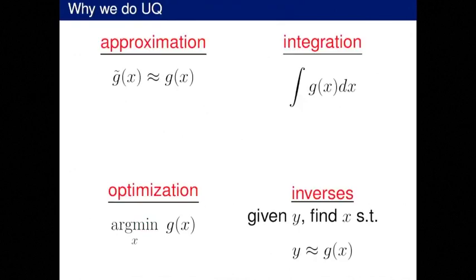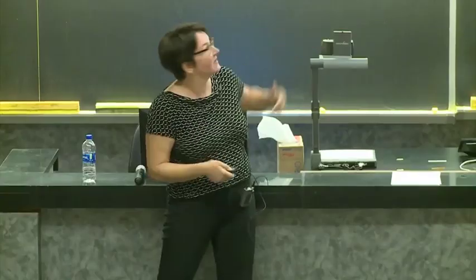In the language of computer models, I have some computer model that maps inputs to outputs. What do we want to do? We might just want to understand the computer model, think about an approximation, do an optimization problem — for example, what design optimizes expense for an automobile or aircraft? Often what we're thinking about is doing integrals, and sometimes we want to do inverse problems, which is what Dr. Oden covered nicely in the last talk.